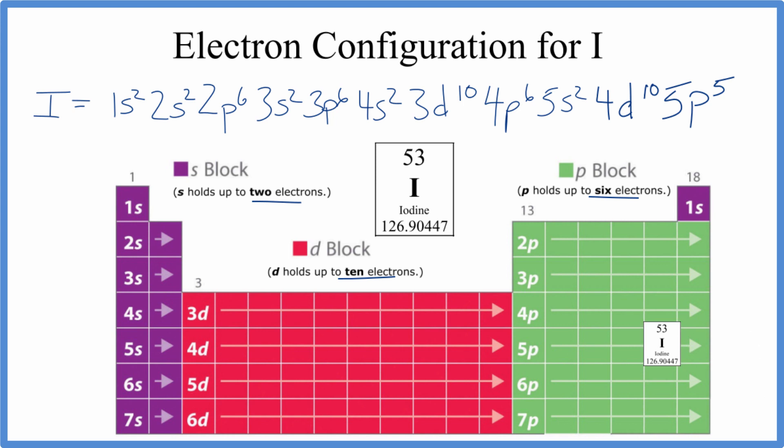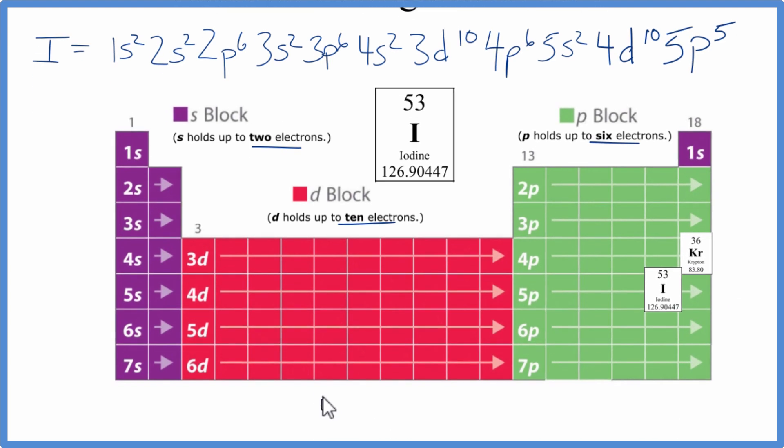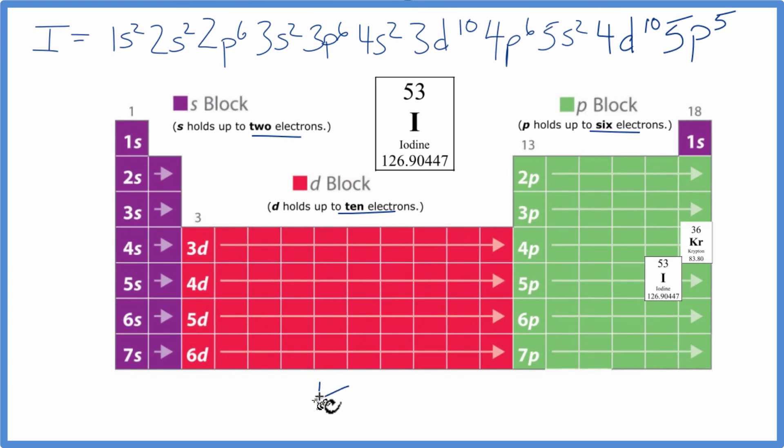So what we do with that is we find the noble gas before iodine. So we go here. This is krypton. And then we would come over to iodine. So we write Kr. And we put that in brackets. And then we write what's after Kr.